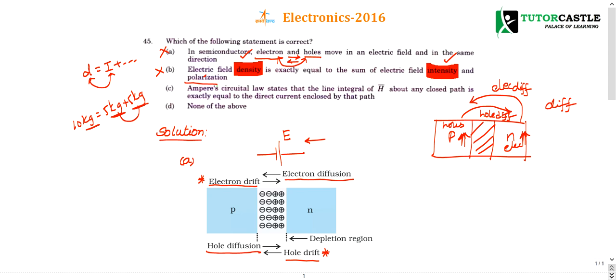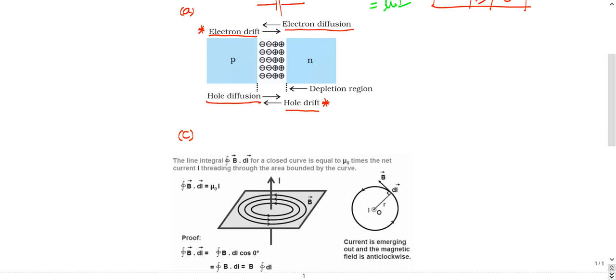Then come to option C. Option C states that Ampere Circuital Law states that the line integral of H means H line integral over a closed path, closed line integral, is equal to direct current enclosed by that path - means H·DL line integral is mu naught into I. So let us see that. So option C is the right choice. I will tell you the proof for it.